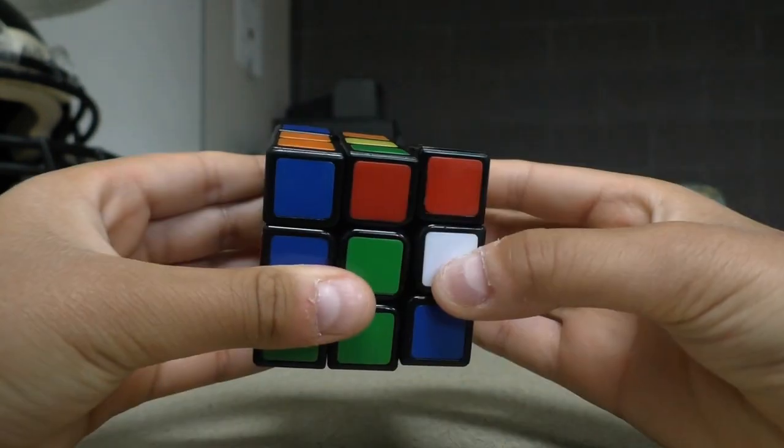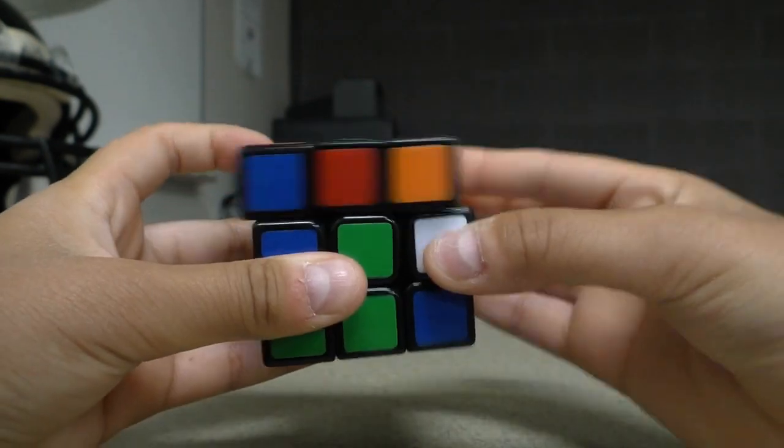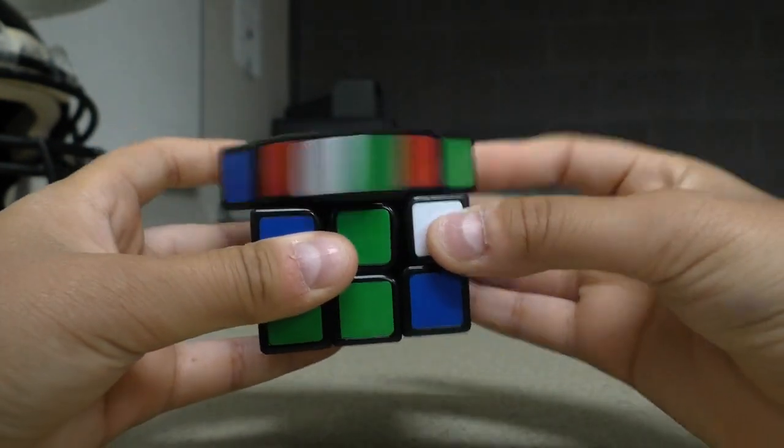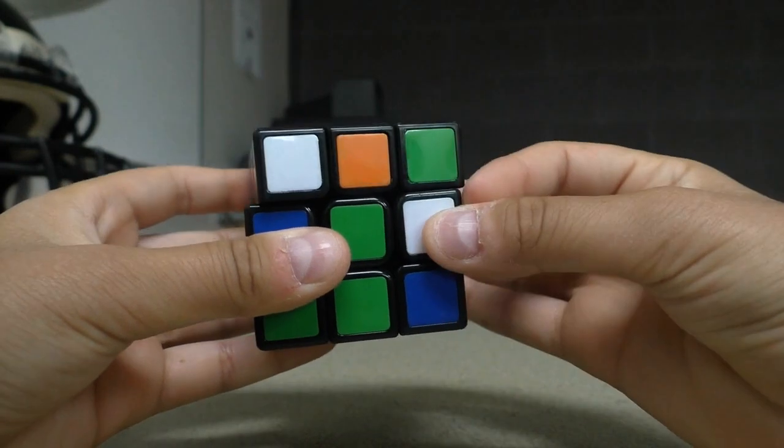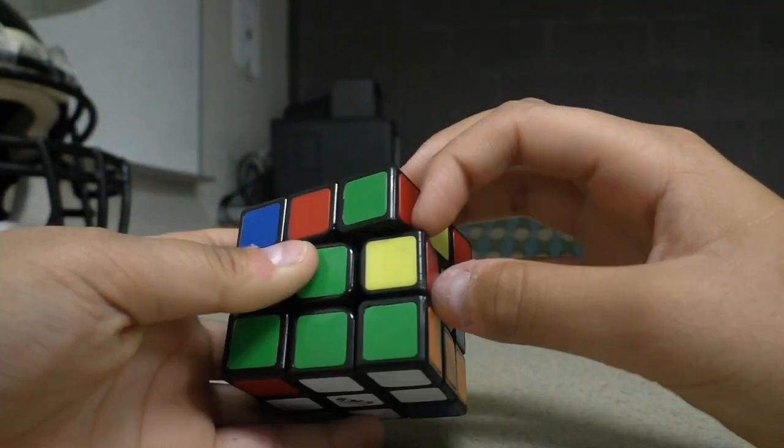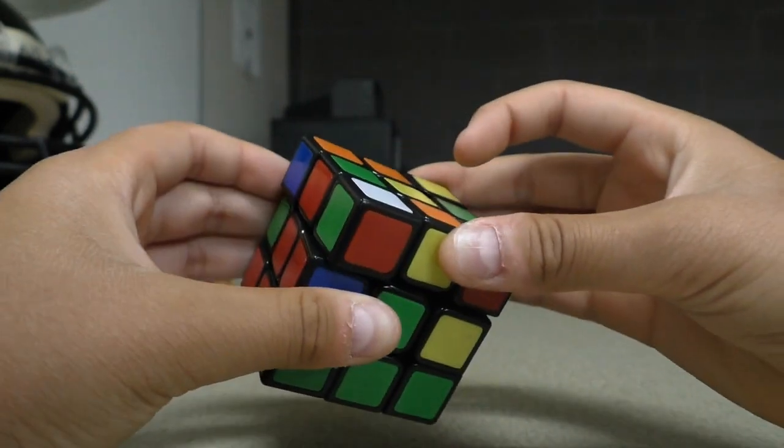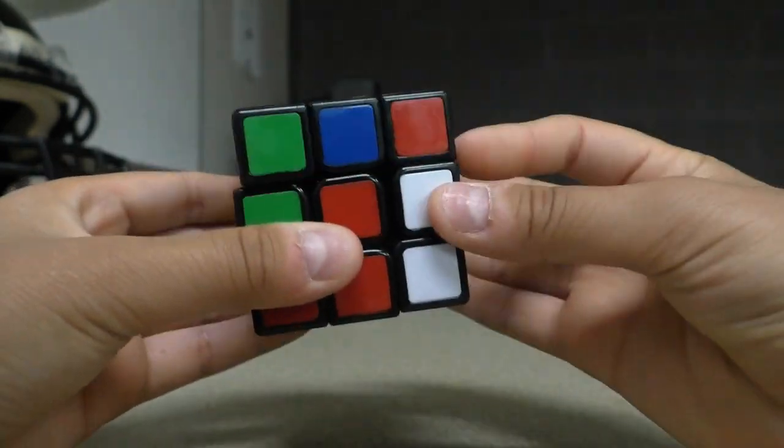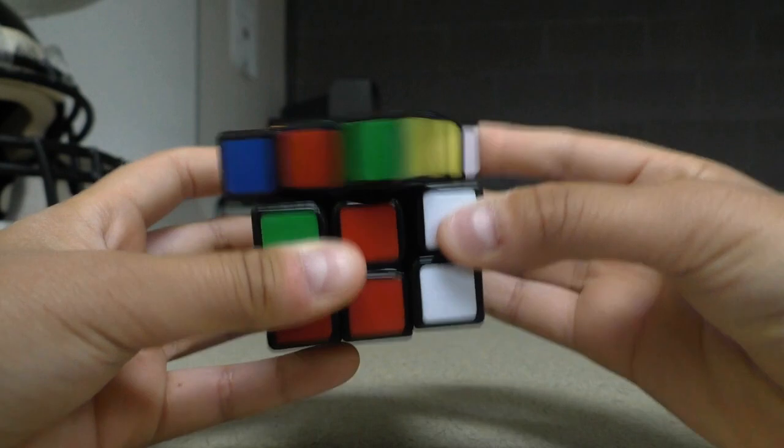Next, you're going to work on the white corners. You're going to put the orange and the green next to each other and then go up, left, down, right, and you're going to repeat this sequence until the white corner is at the bottom. Now we're going to put this in between the red and the green because it's in between the red and green.